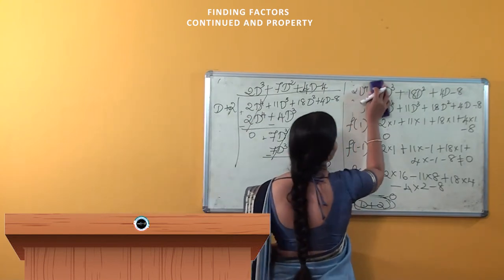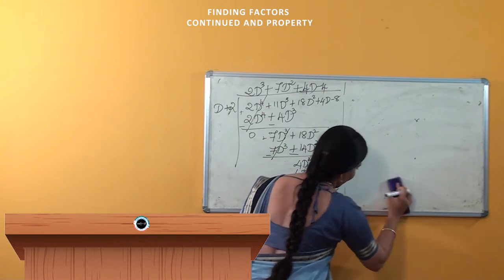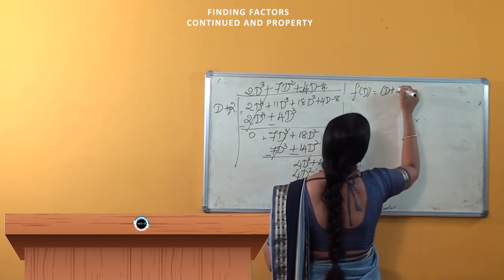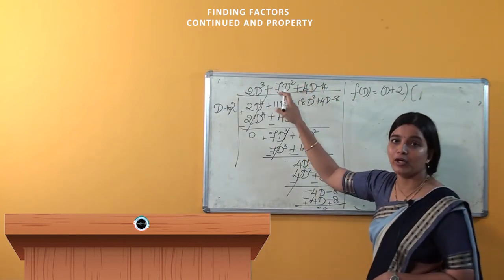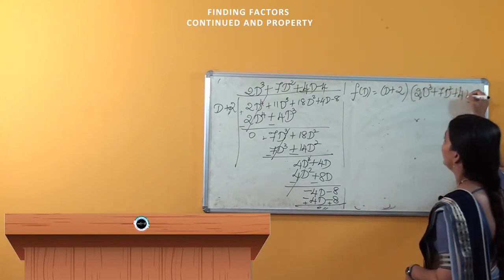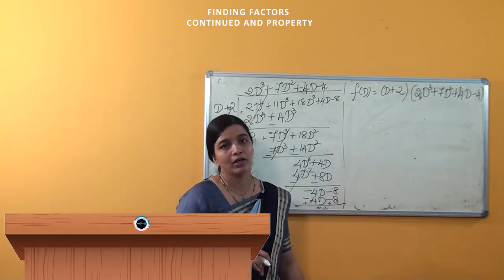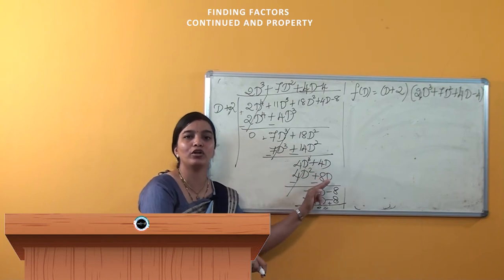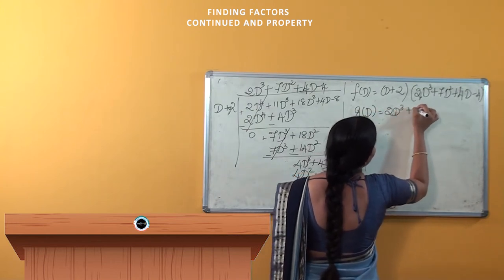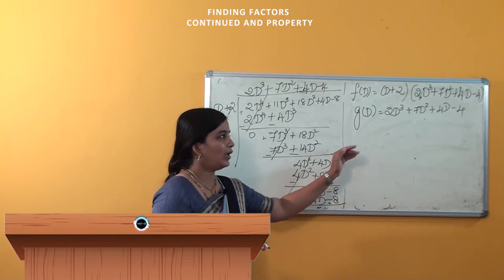We got one more root of the equation. That is f(d) = (d + 2) times the coefficients we obtained: 2d³ + 7d² + 4d - 4. Can we simplify further? No — it is still a cubic equation, third power, so we have to follow the same steps. I will consider this equation as g(d) = 2d³ + 7d² + 4d - 4, just to make the simplification easier.